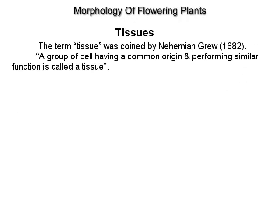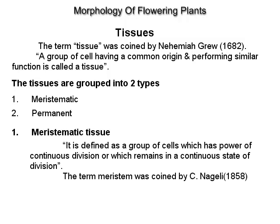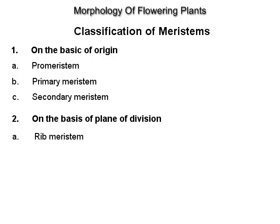Tissues. The term tissue was coined by Nehemia Grew in 1682. A group of cells having a common origin and performing a similar function is called a tissue. Tissues are grouped into two types: meristematic and permanent. Meristematic tissue is defined as a group of cells which has the power of continuous division. The term meristem was coined by C. Nageli in 1858. Classification of meristems: on the basis of origin — promeristem, primary meristem, secondary meristem. On the basis of plane of division — rib meristem, plate meristem and mass meristem.